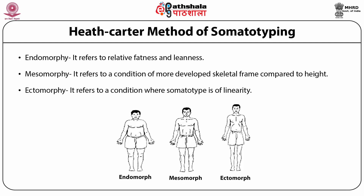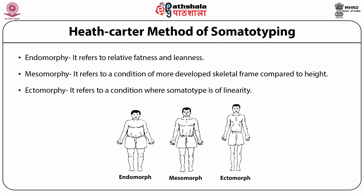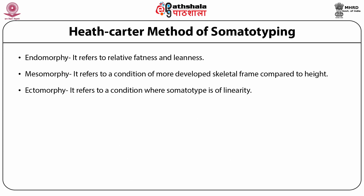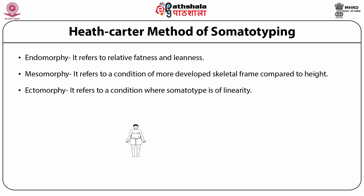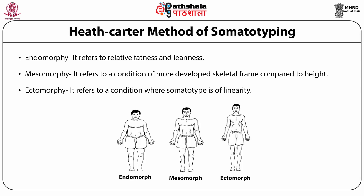The first component, endomorphic, refers to relative fatness and leanness. The second component, mesomorphic, refers to a condition where the skeletal frame is more developed compared to height. The third component, ectomorphic, refers to linearity of the somatotype. Lower ratios of the first element mean an extremely small amount of non-essential fat; higher ratios relate to higher non-essential fat. If the second element is lower, skeleton frames are light and muscles are not definite; if higher, the musculoskeletal system is significantly developed. If the third element is lower, weight takes up more in comparison with height; if higher, weight takes up much less compared to height and bodies are linear with a higher HWR.